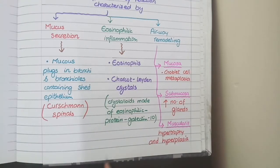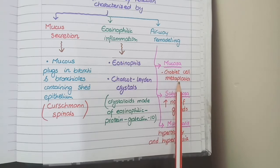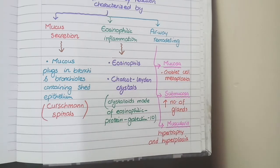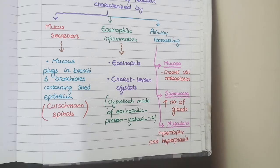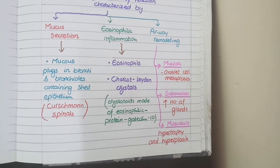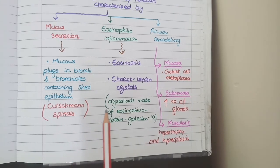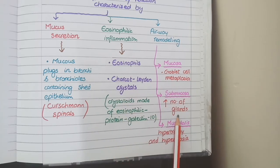The third element is airway remodeling — structural changes in the wall of airways. At the mucosal layer, you see goblet cell metaplasia. At the submucosal layer, the total number of glands is increased. At the muscularis layer, you see hypertrophy and hyperplasia of bronchial muscles. Overall on microscopy, asthma shows mucous plugs known as Curschmann spirals, eosinophils and Charcot-Leyden crystals, goblet cell metaplasia, increase in number of glands, and bronchial muscle hypertrophy and hyperplasia.